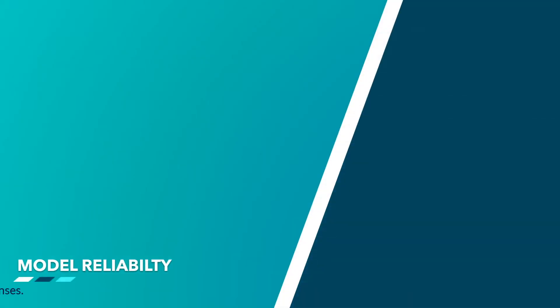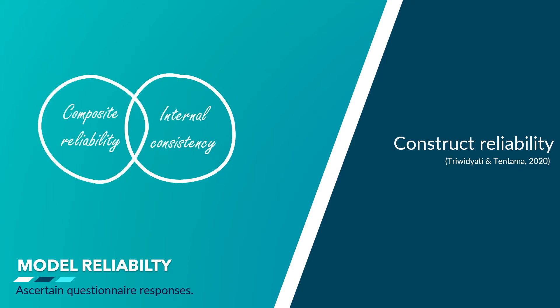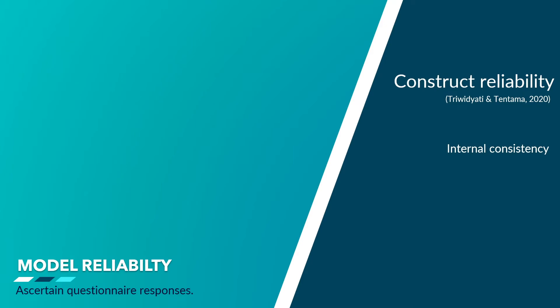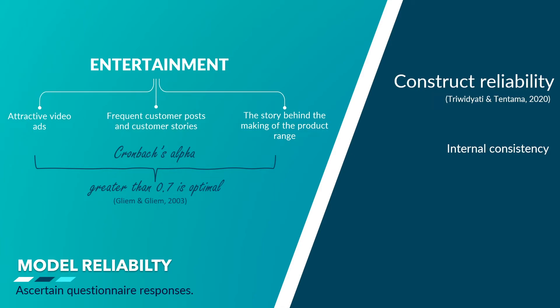In our case, we don't have numeric values for our selected dimensions, so they are being computed as latent variables. Therefore, we have selected a construct reliability test to check the reliability of the model. This tests the efficiency of a dimension. To ascertain construct reliability, we must also understand internal consistency and composite reliability. Internal consistency means making sure that the results from these statements are pointing to the same dimension. For example, if I am using ads, posts, and behind-the-scenes information, then they should compute the entertainment dimension only. To measure internal consistency, use the Cronbach's alpha test — it is favorable to accept results that have a value of more than 0.7.